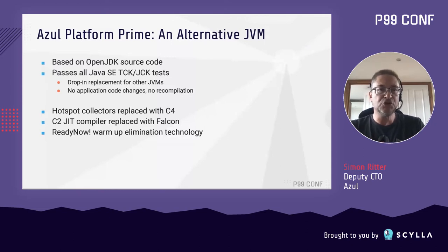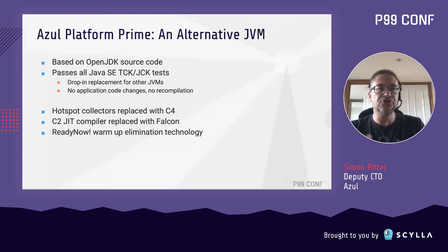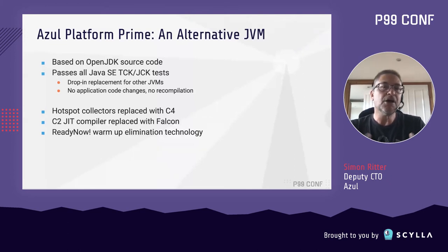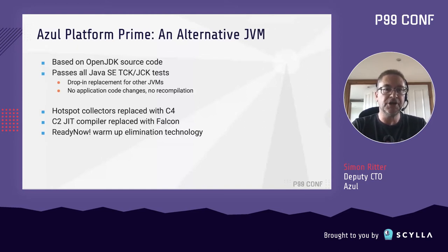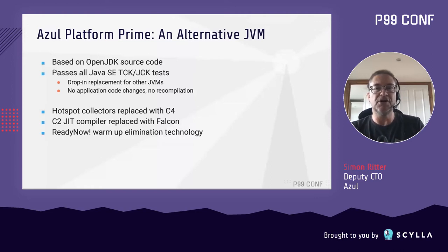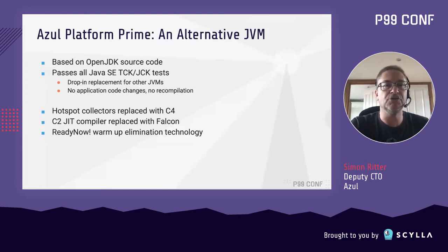Having done that, we need to make sure that it's still Java. So we run all of the TCK tests — that's somewhere between 100,000 and 150,000 tests that you need to pass on a Java environment to prove that you conform to the Java standard. What that means is that you can take your existing application, you don't need to make any changes to the code, you don't need to make any recompilation. You can just take your jar files and your class files, change the path in the Java home, and off you go — so it's a drop-in replacement.